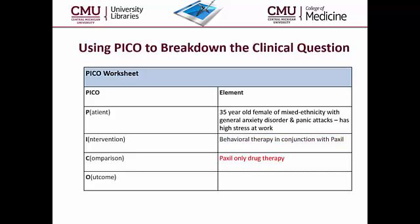With C, consider the comparative therapy or control group. However, C will not always be used when utilizing PICO. O will always be your goal for finding that key article citation or group of applicable article citations.